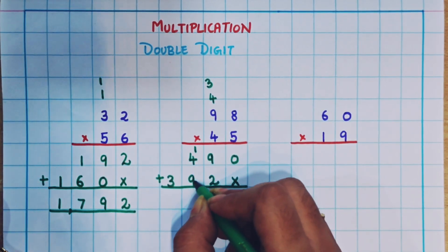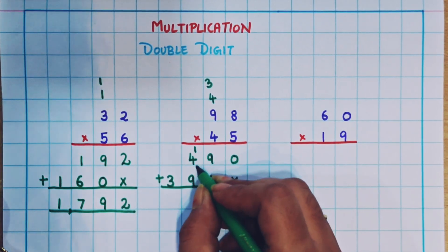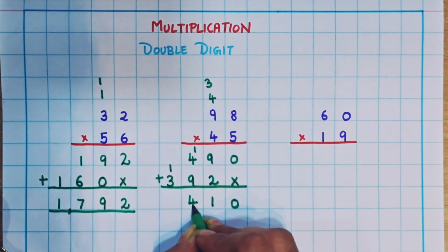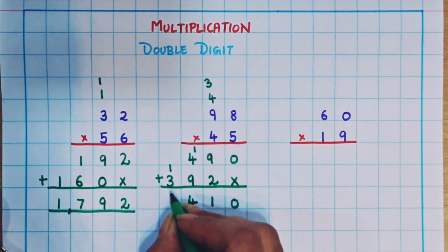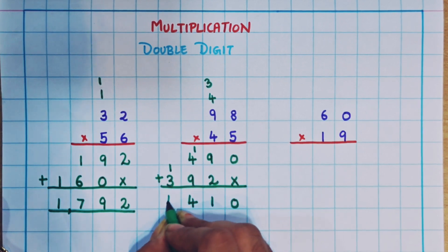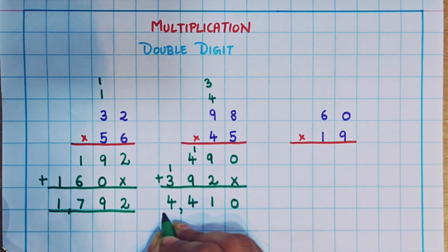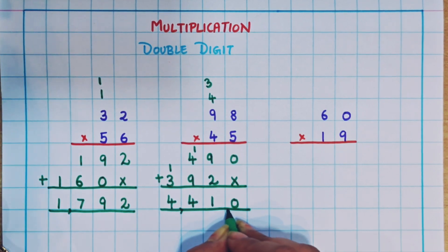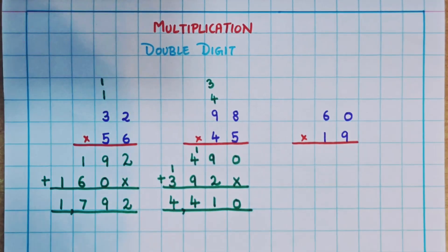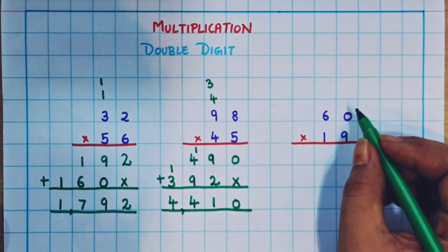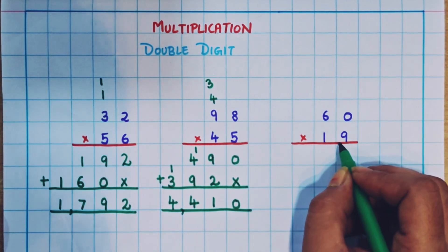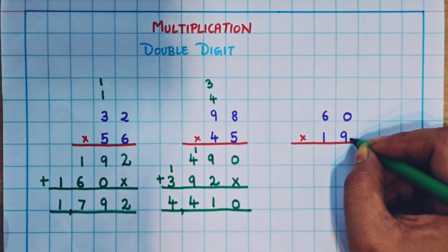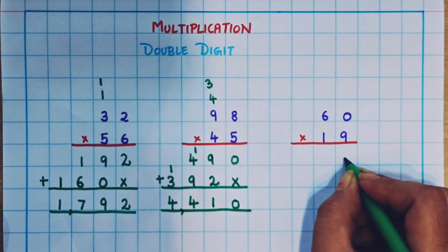9 plus 1 is 10, plus 4 is 14. So here I'll write 14. 1 plus 1 plus 3 is 4. So here I'll write 4. The answer is 4410. Now let's see one more example: 60 into 19.